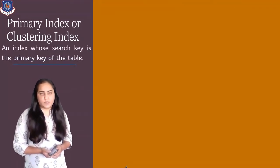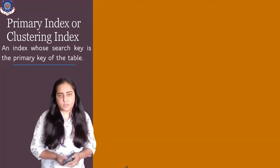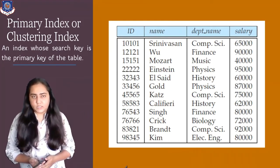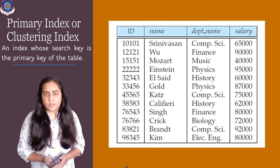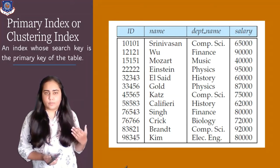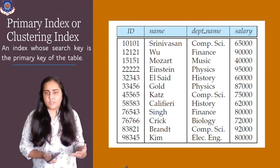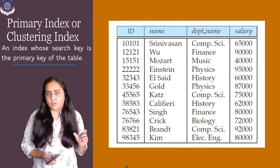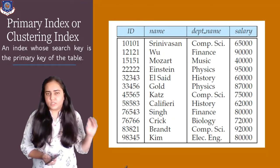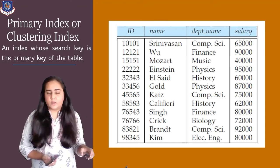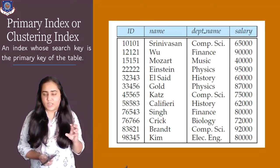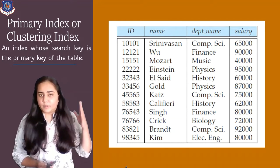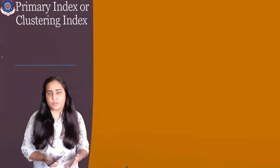A primary or clustering index is one where the search key is the primary key of the table. If this is my table, I can see that the ID of the instructor is the primary key. The index is built on the ID, meaning the ID values are stored in the index along with the address of the corresponding row in secondary memory.